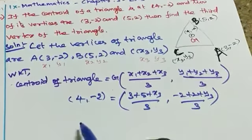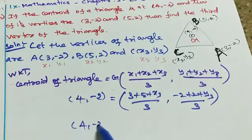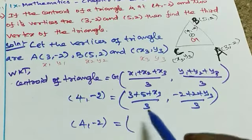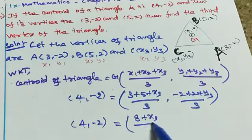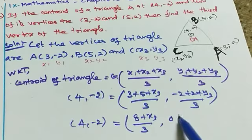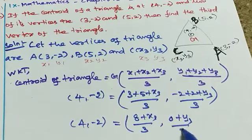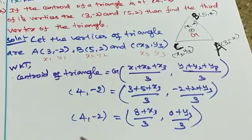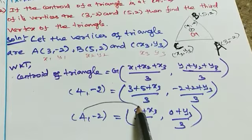Simplifying: (4, -2) = ((8 + x3)/3, y3/3). Since 3 + 5 = 8 for x-coordinates, and -2 + 2 = 0 for y-coordinates, we have (4, -2) = ((8 + x3)/3, y3/3).